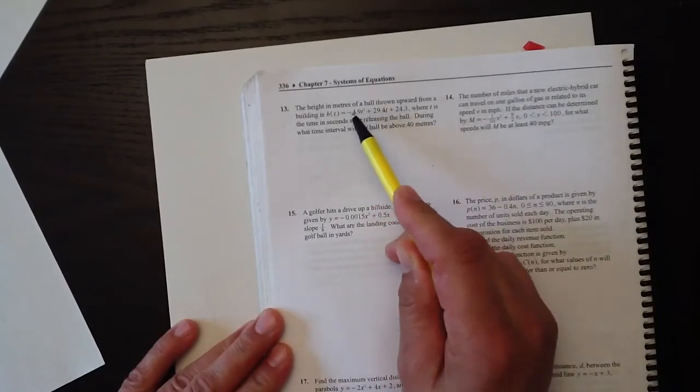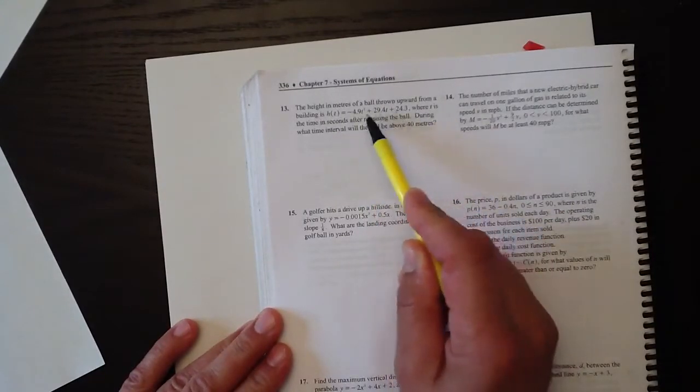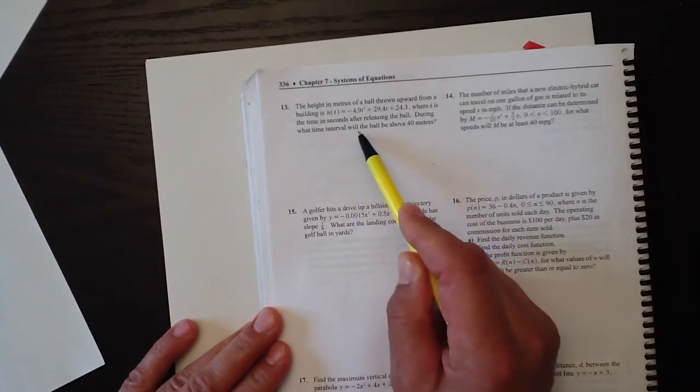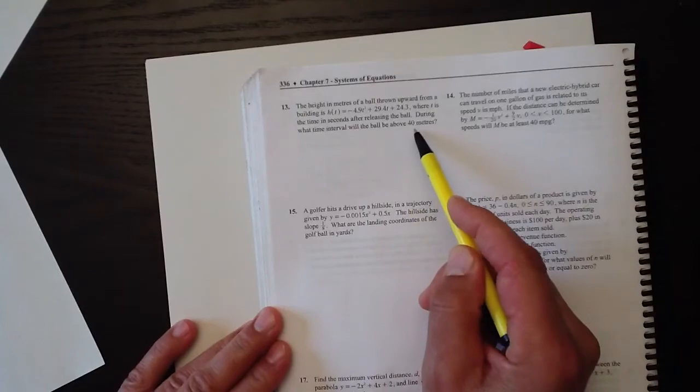So the height in meters of a ball thrown upward from a building is this equation thing, where t is the time in seconds after releasing the ball. And during what time interval will the ball be above 40 meters?